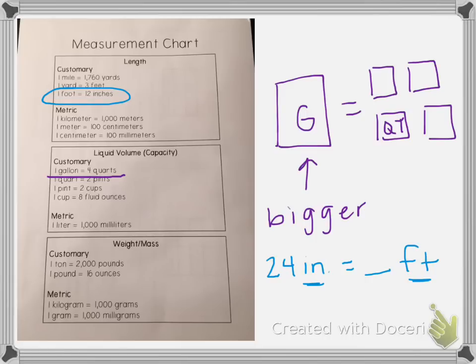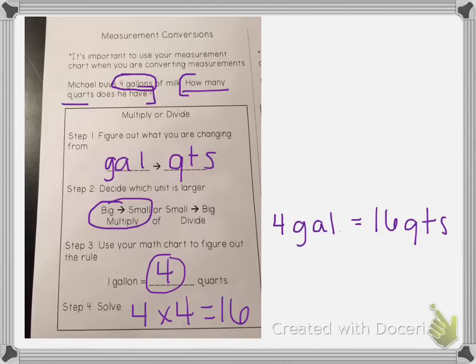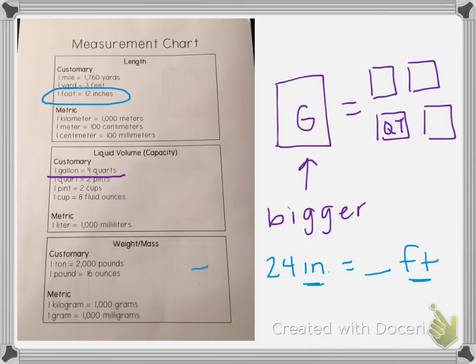So that tells me that I'm going to need to be dividing, because remember our step says that if we're going from smaller to bigger we're going to divide. And here in the table one foot is equal to 12 inches so I'm going to divide by 12. So I'm going to do 24 divided by 12 which equals 2. So 24 inches equals 2 feet.